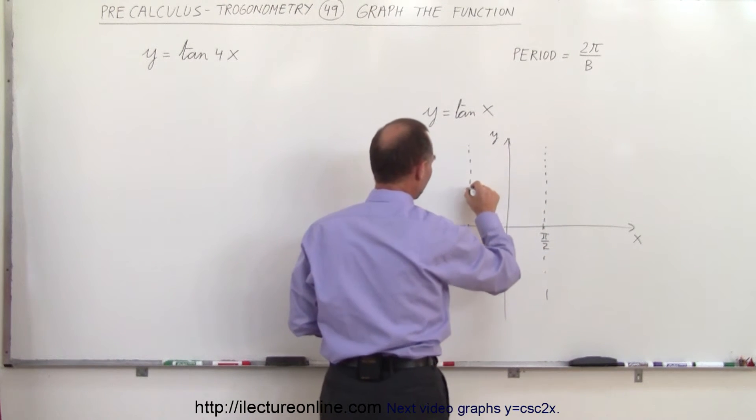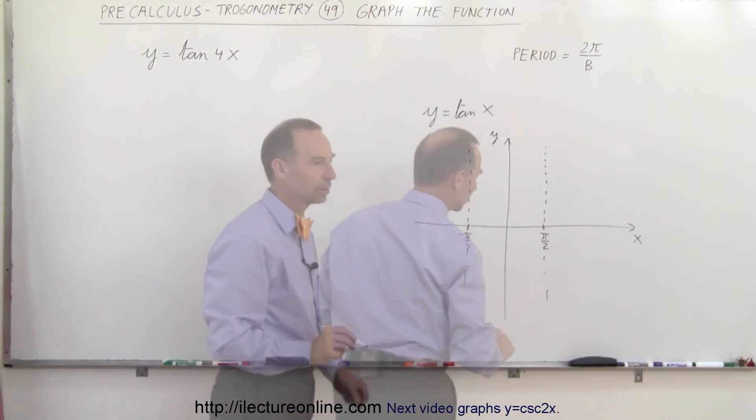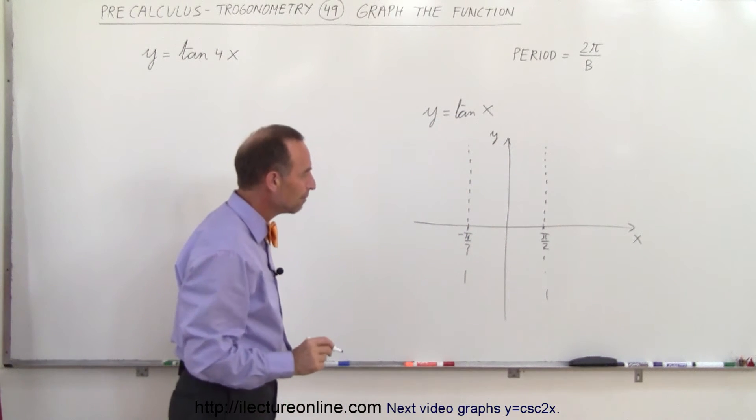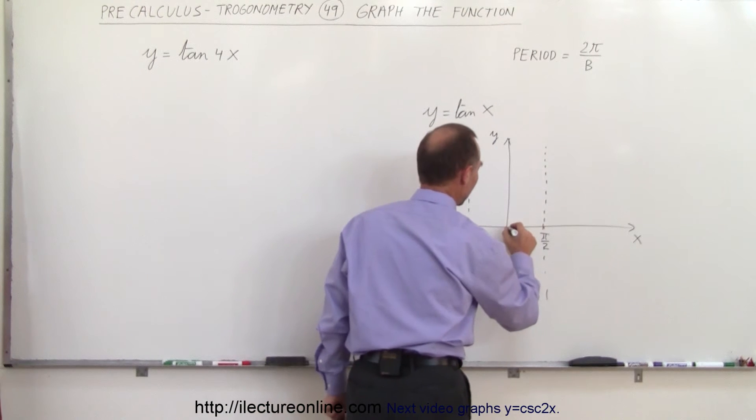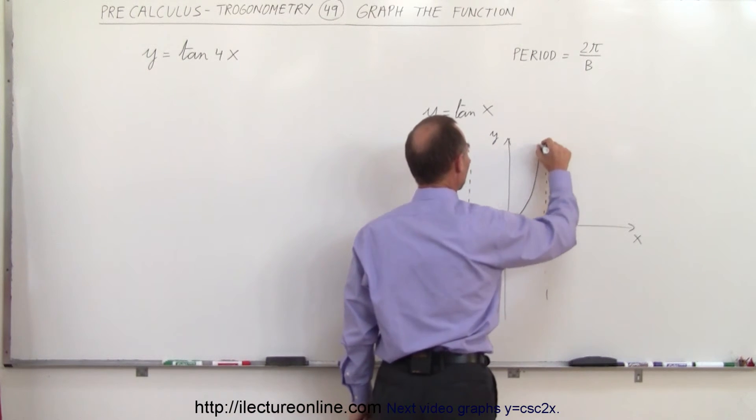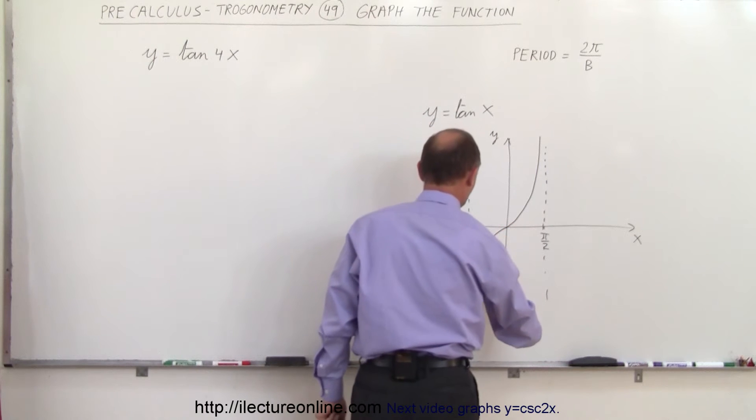We know that the function falls between pi over 2 and minus pi over 2. The two can disappear here. And so we can see that the tangent will come like this and go down like this.